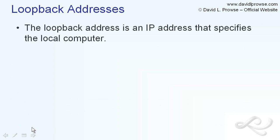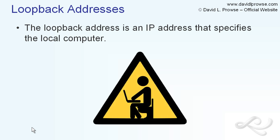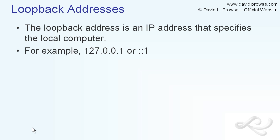The loopback address is an IP address that specifies the local computer — the computer that you're currently sitting at, the one that you're currently working on. For example, the IPv4 loopback address is 127.0.0.1. It is the computer. In IPv6, it's ::1. The loopback address is a component of every computer. It relates directly to the localhost hostname, meaning this computer, the one that you're sitting at.